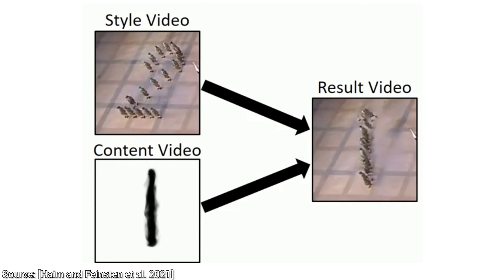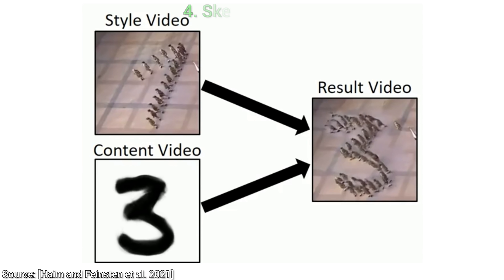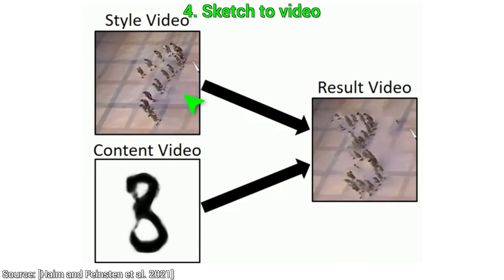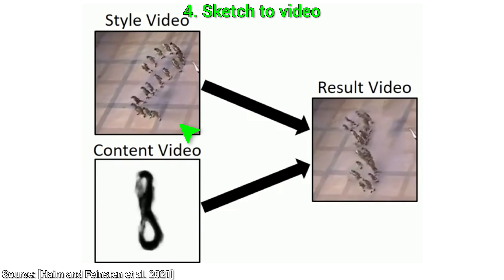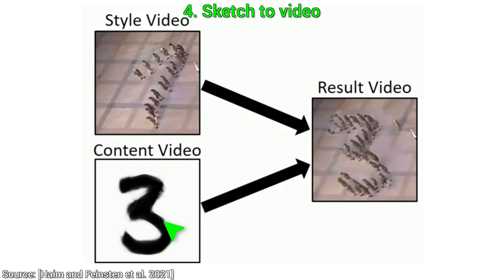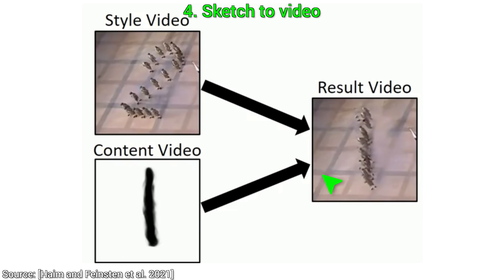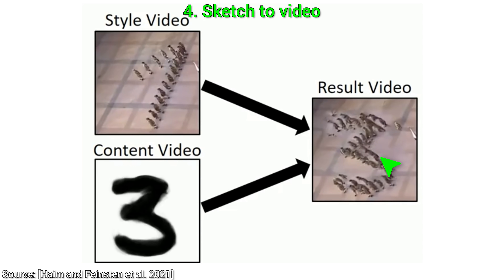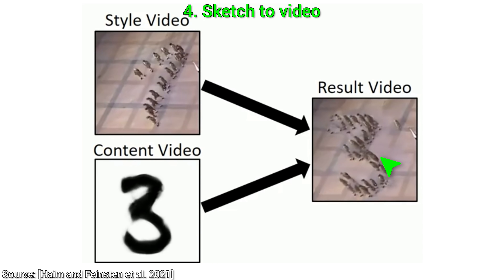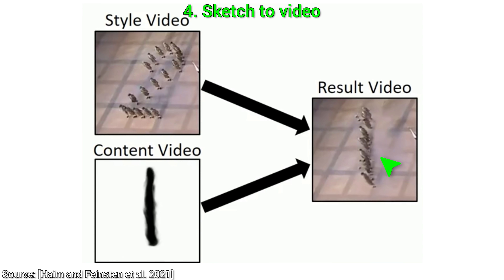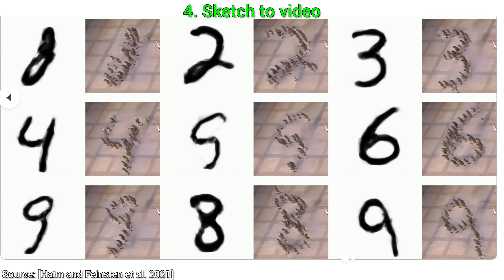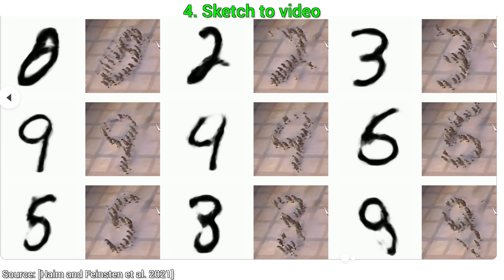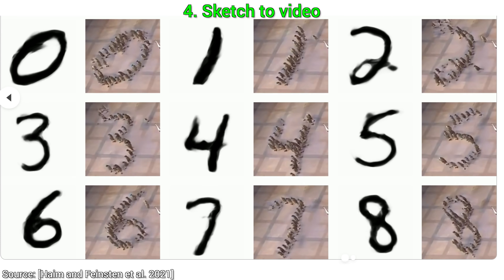Amazing feature number four: sketch to video. Here, we can take an input video, add a crude drawing, and the video will follow this drawing. The result is, of course, not perfect, but in return, this can handle many one-to-one transitions.